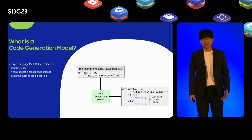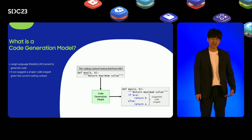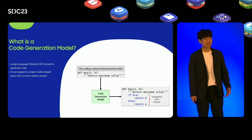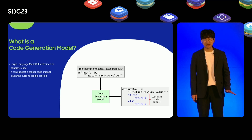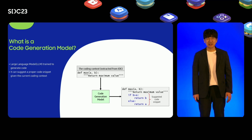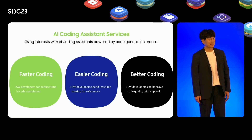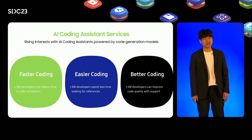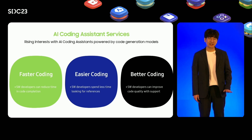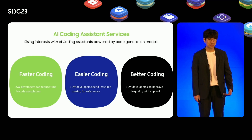A code generation model is a large language model specialized in creating code. It learns from extensive code data, enabling it to predict the next lines of code in a given context. For instance, if someone initiates a function with a comment describing its purpose, the model can generate the remaining code for that function. With the advent of code generation models, we've seen a surge in AI coding assistant tools. These tools aid developers in writing a program, finding references, and improving code quality.